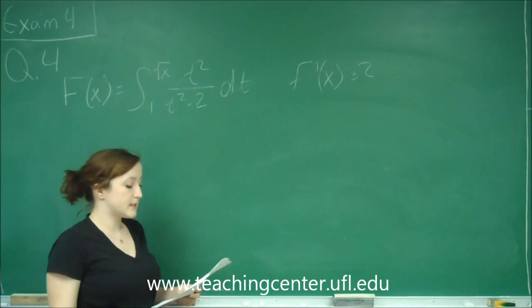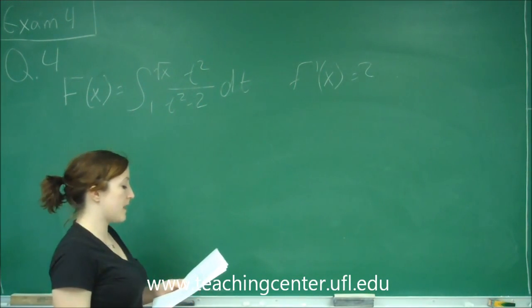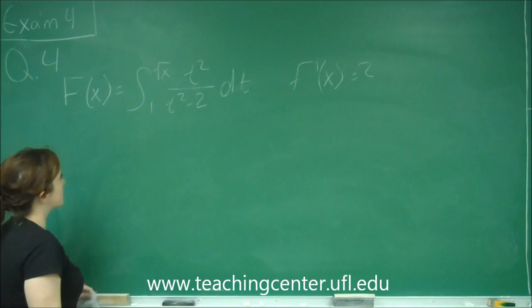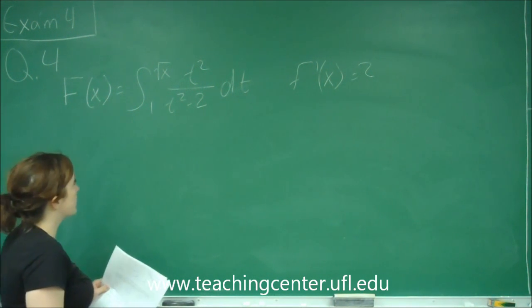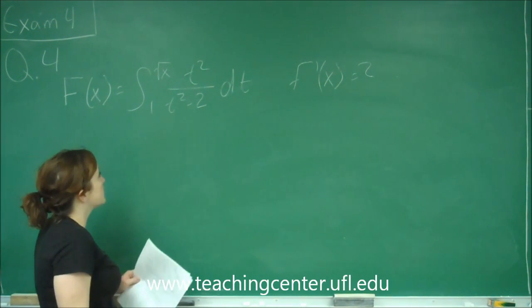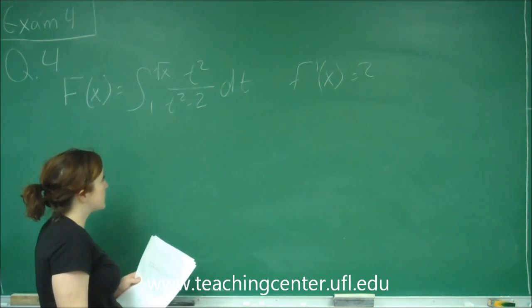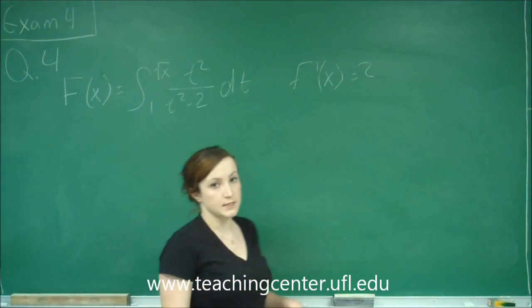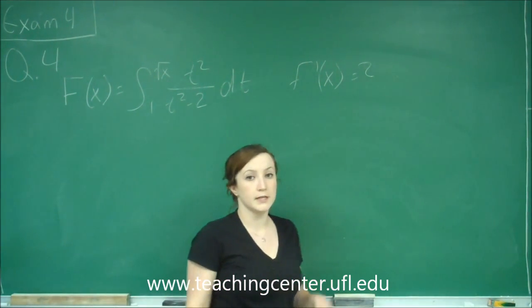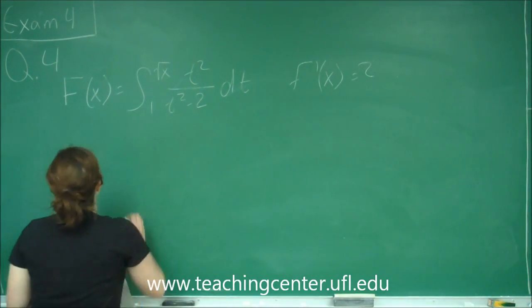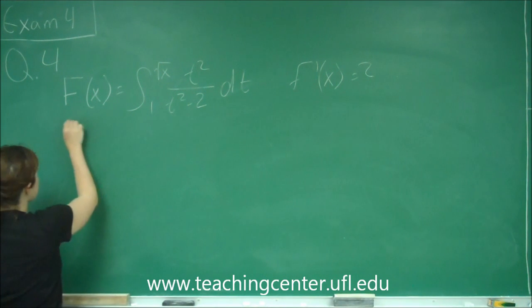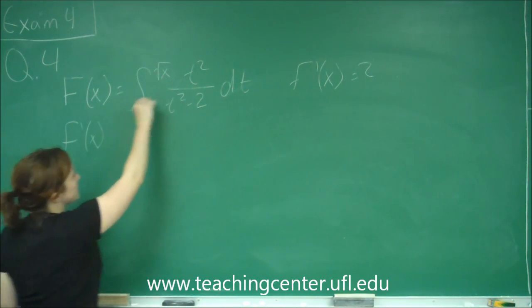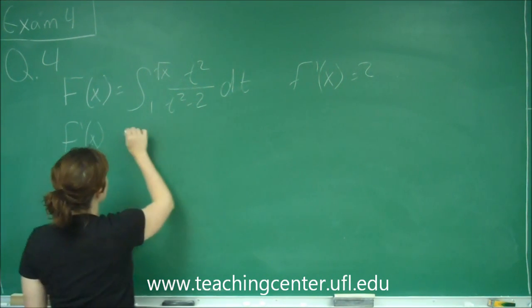This is question number 4. It says if capital F of X is equal to the integral from 1 to the square root of X of T squared over T squared minus 2 DT, we want to know what F prime of X is. So what we're going to do is take the derivative of both sides, and we get F prime of X will be equal to the derivative of this.